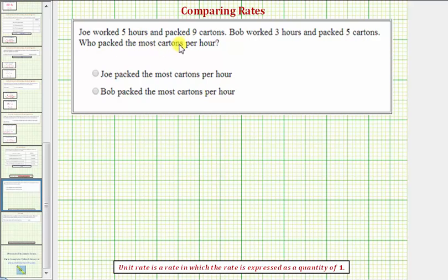Joe worked five hours and packed nine cartons. Bob worked three hours and packed five cartons. Who packed the most cartons per hour? To answer this question, we want to find the unit rate in cartons per hour for both Joe and Bob.